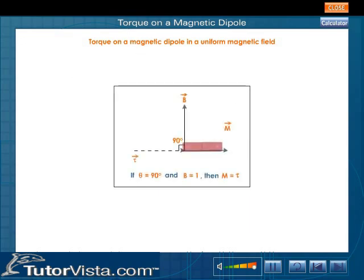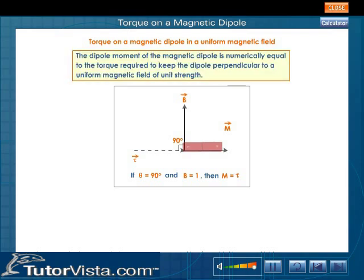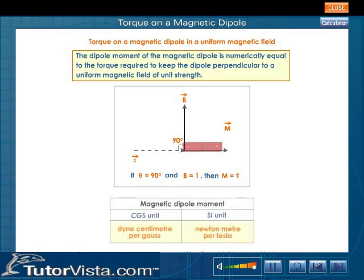If θ is equal to 90 degrees and B is equal to 1 then M is equal to Tau. That is, the dipole moment of the magnetic dipole is numerically equal to the torque required to keep the dipole perpendicular to a uniform magnetic field of unit strength. In the CGS system, the unit of magnetic dipole moment is dyne centimeter per Gauss. In the SI, the unit of magnetic dipole moment is Newton meter per Tesla.